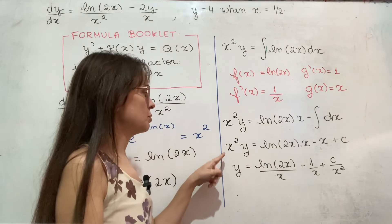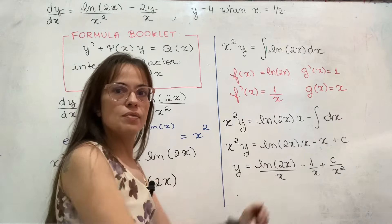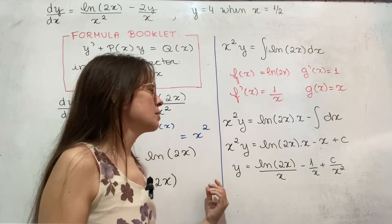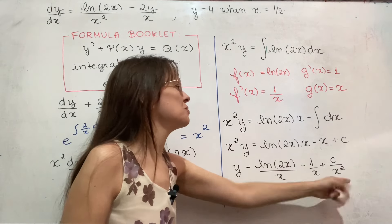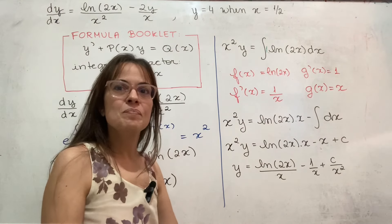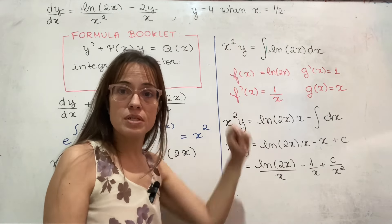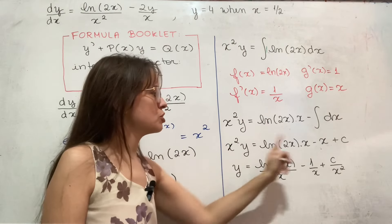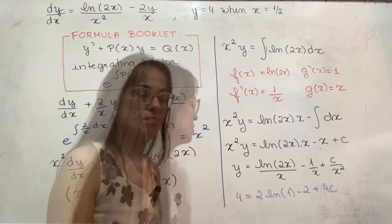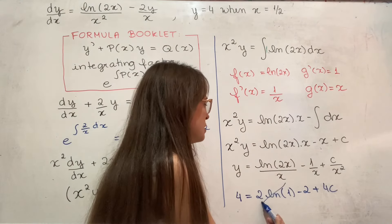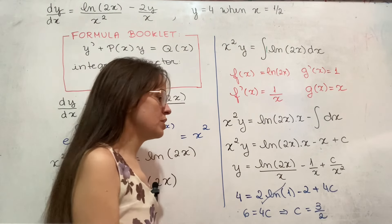Then you divide both sides by x squared to get y equals that function of x. Don't make the mistake — c also needs to be divided by x squared. As a last step, take the point given in the problem and substitute it in to find the value of c. Since ln of 1 is zero, we get 6 equals 4c, so c equals three halves.